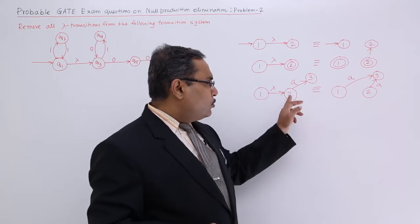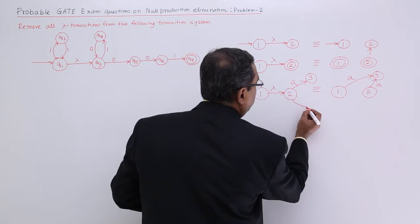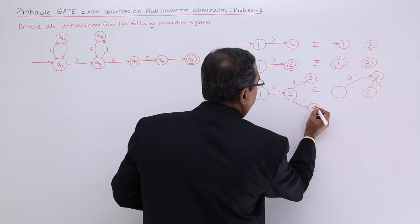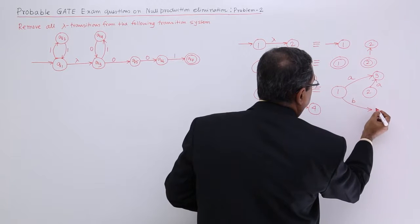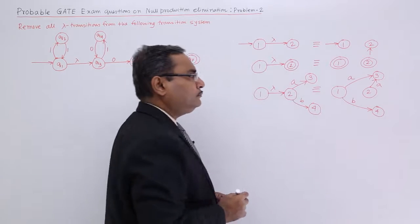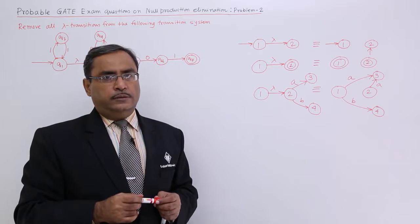And whatever the outer edges are coming out, say I am drawing this one in this way, it is coming to 4 with the label B. Then here there will be one edge with the label B and it will be coming to the state 4. So in this way the rules were discussed.